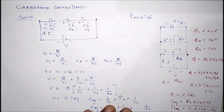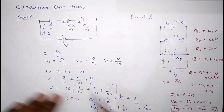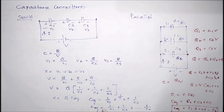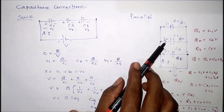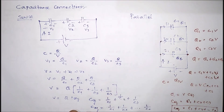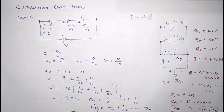So, if capacitances are connected in series, to get the equivalent capacitance we have to add the reciprocal values: 1/Ceq equals 1/C1 plus 1/C2 plus ... plus 1/Cn. If capacitances are in parallel, we simply add the capacitance values to get the equivalent capacitance. That's all about the capacitance connections.